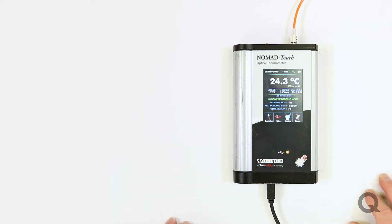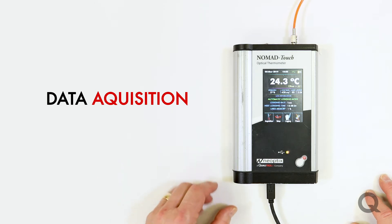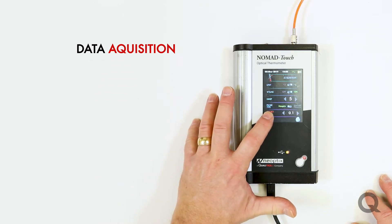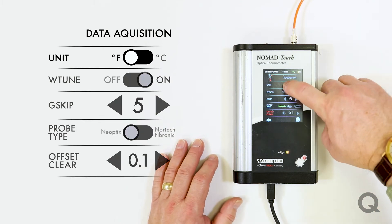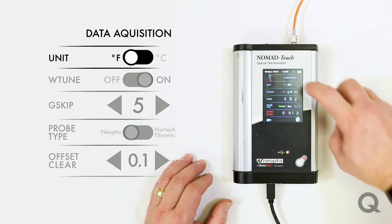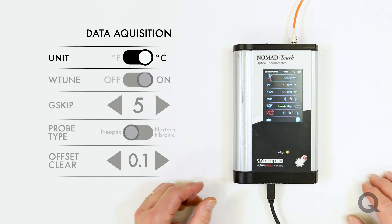The Nomad Touch is able to do data acquisition as well as instantaneous reads of temperature. You can set up your data acquisition. Obviously, if you want degrees Fahrenheit or degrees Celsius, you have that choice.